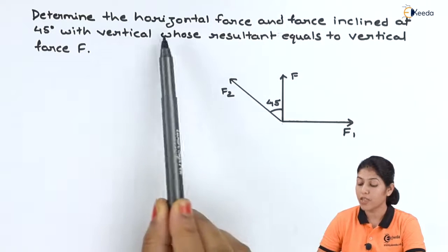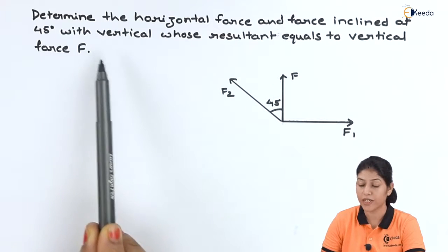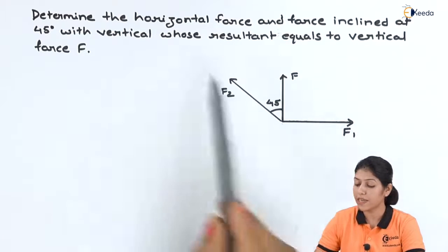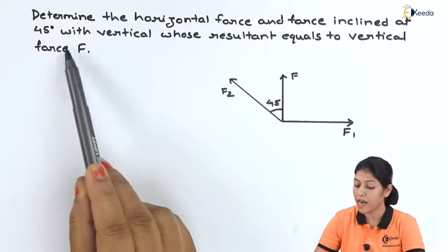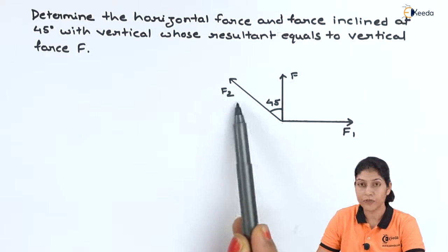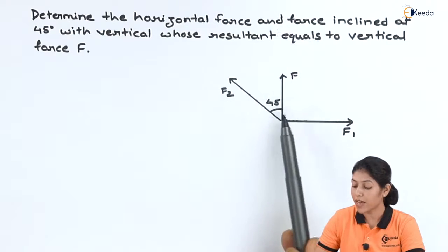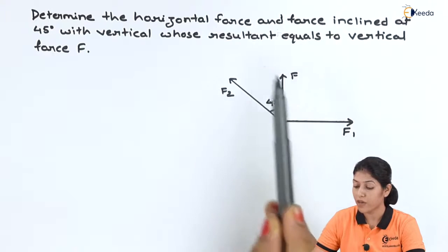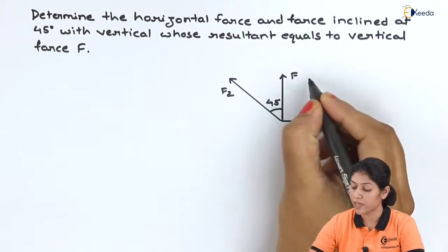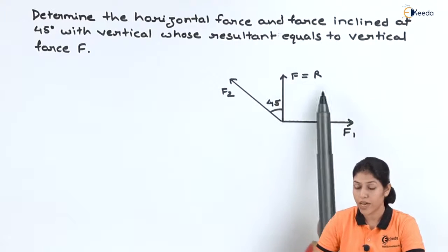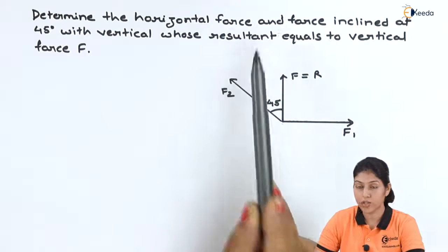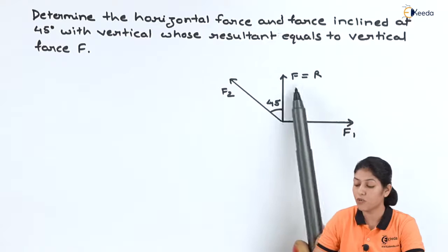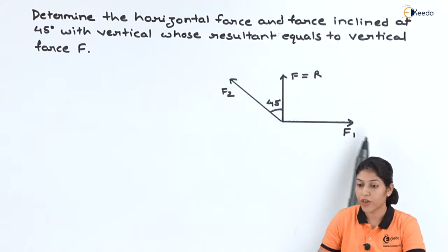Here we have to find out the horizontal force and a force inclined at 45 degrees with the vertical. If we draw these two forces, F1 is representing the horizontal force and the force inclined at 45 degrees with the vertical is represented by F2. This angle we are taking with the vertical surface, and at this vertical surface we are considering one resultant force F, which equals the resultant. We have to determine F1 and F2.